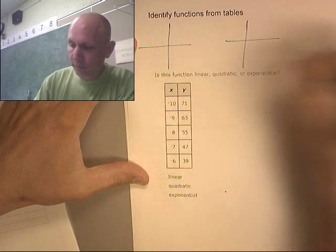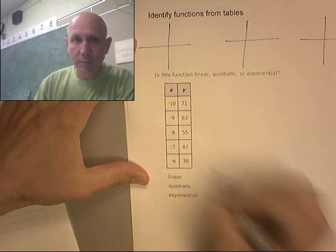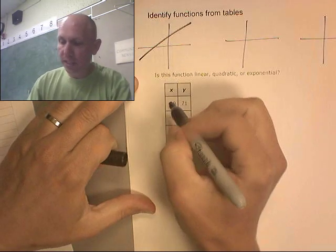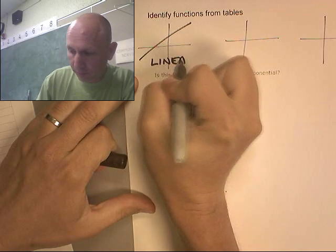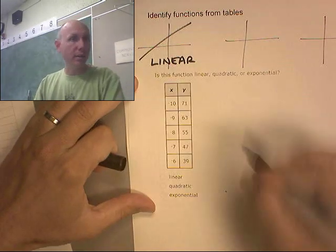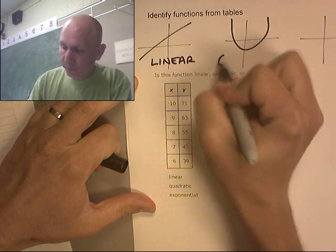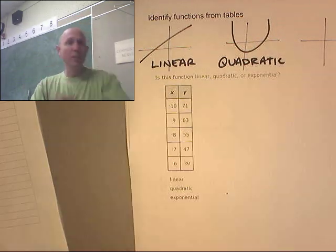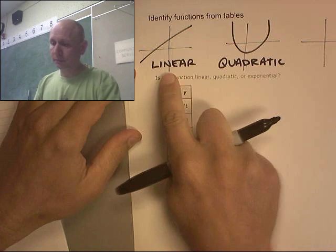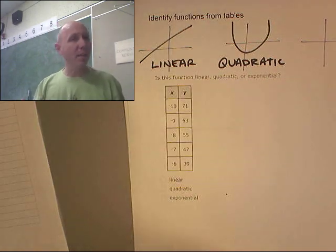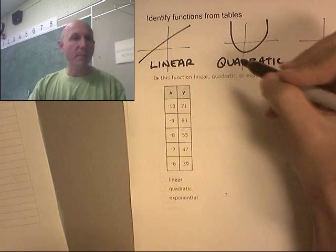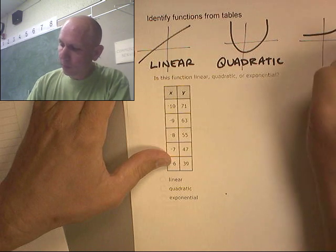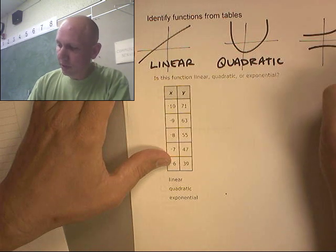I'm going to make three graphs here. The most basic one is the linear, which just makes a line. The next one is a quadratic — quadratics are going to make parabolas, which are U-shapes. They can also be upside down. And the final one is exponential, which usually does something like that or something like that.